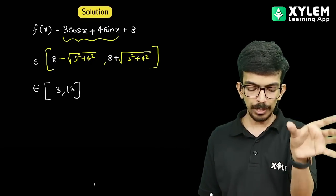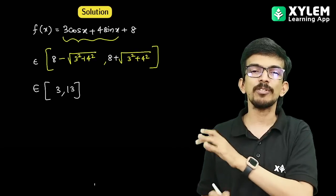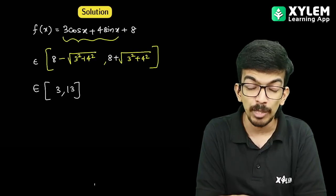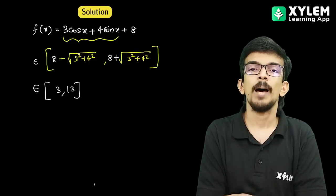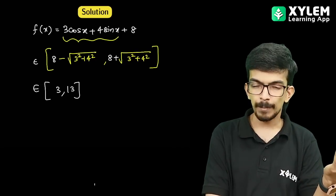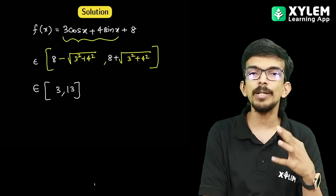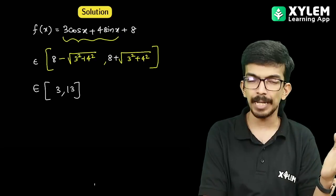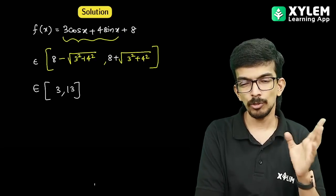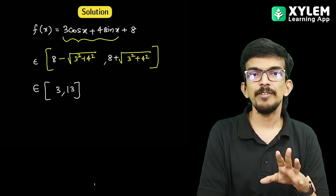If 3 cos x plus 4 sin x is equal to minus 5, then 3 cos x plus 4 sin x plus 8 equals minus 5 plus 8 equals 3. So the minimum value is 3.